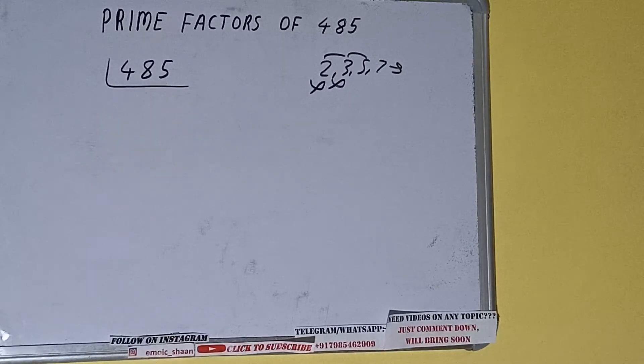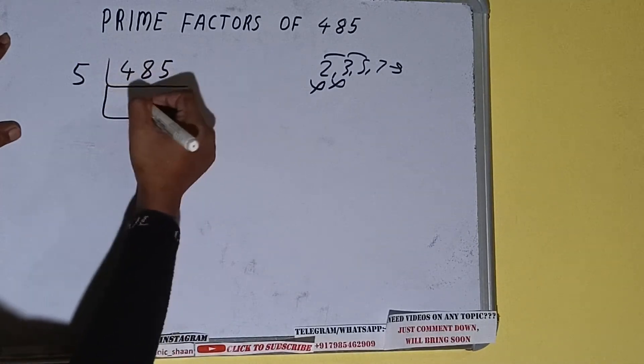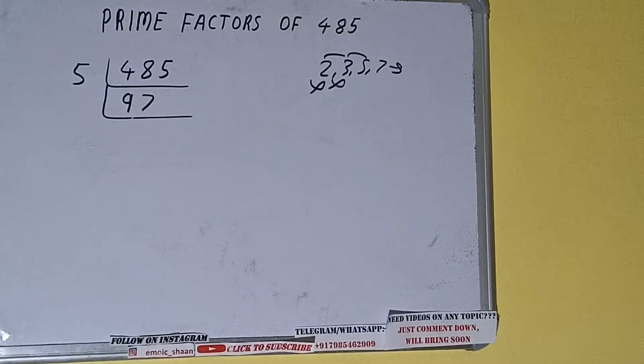is five, so yes it is divisible by five. So divide it. Five nines are 45, three five, five sevens are 35. We'll be having 97. Now is this 97 further divisible by five? The answer is no, and